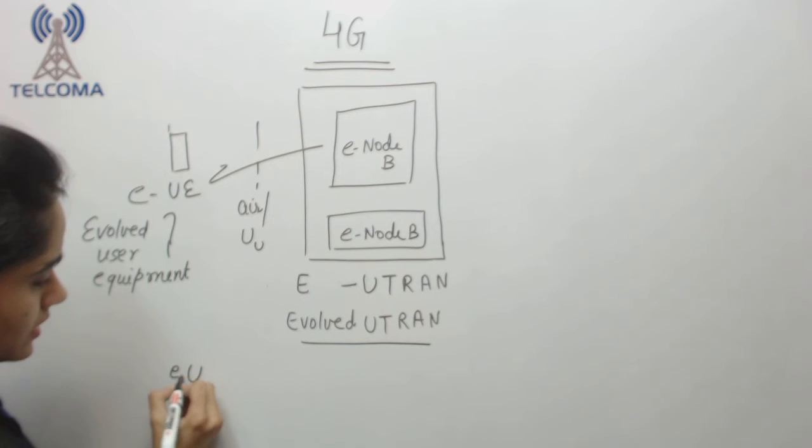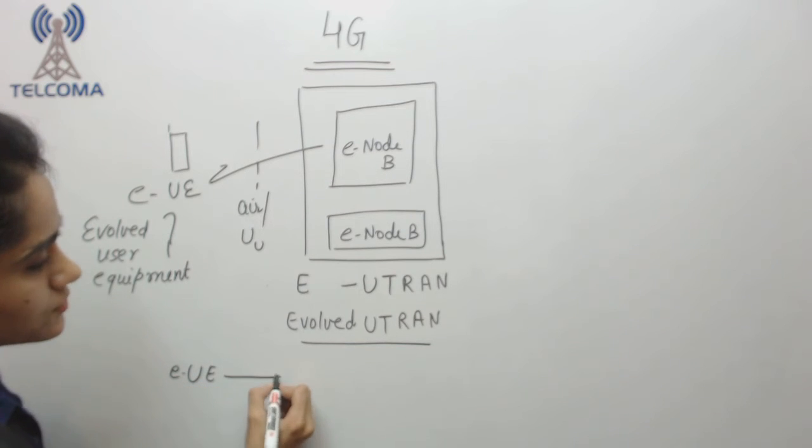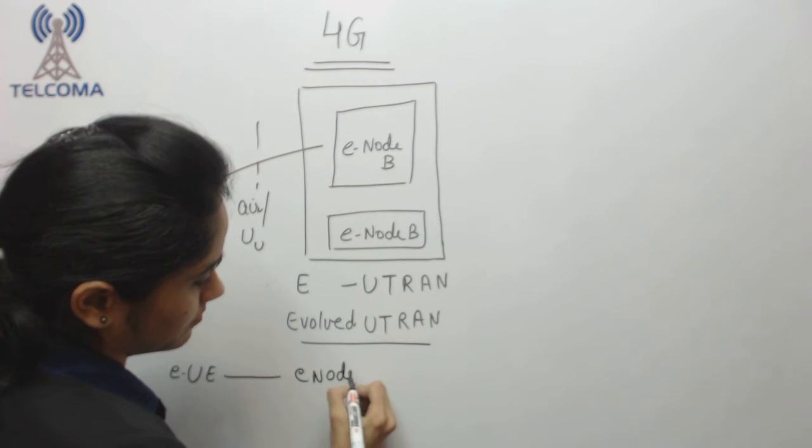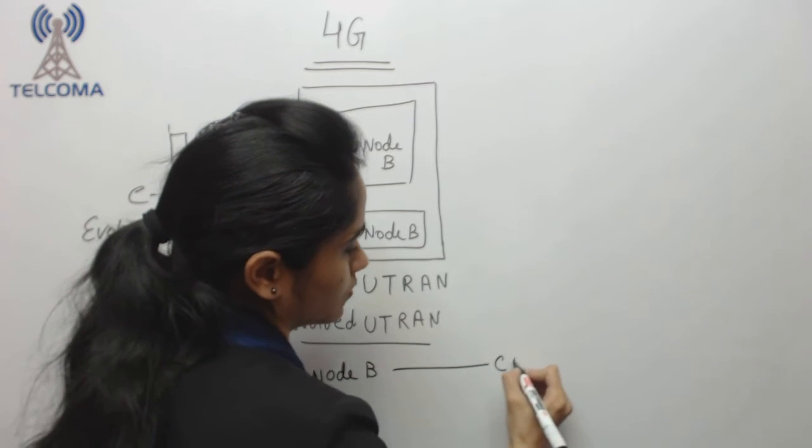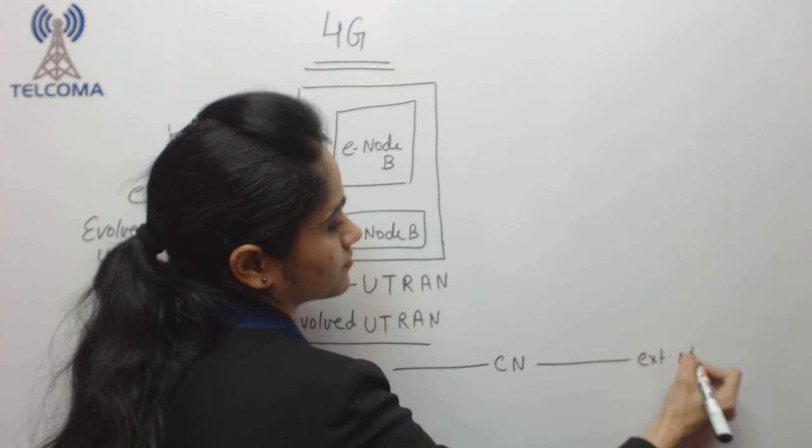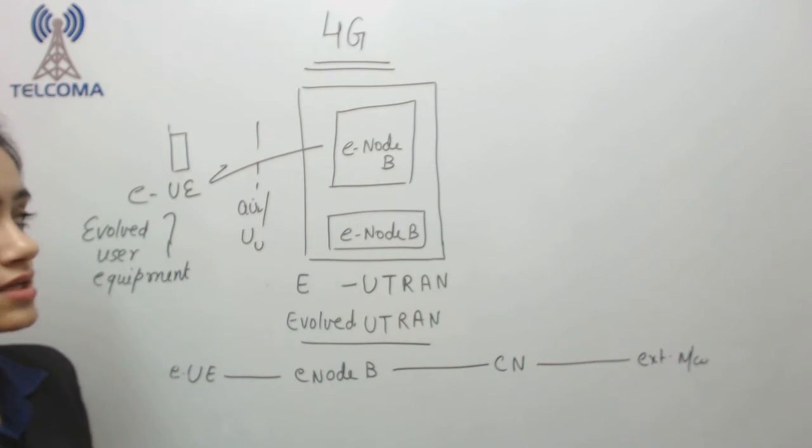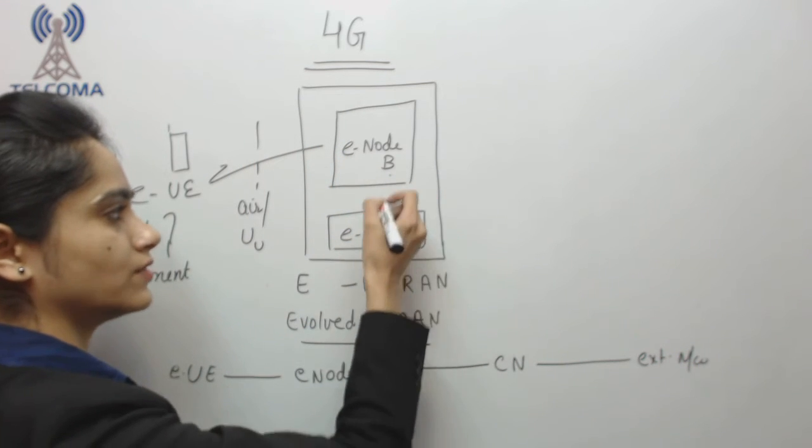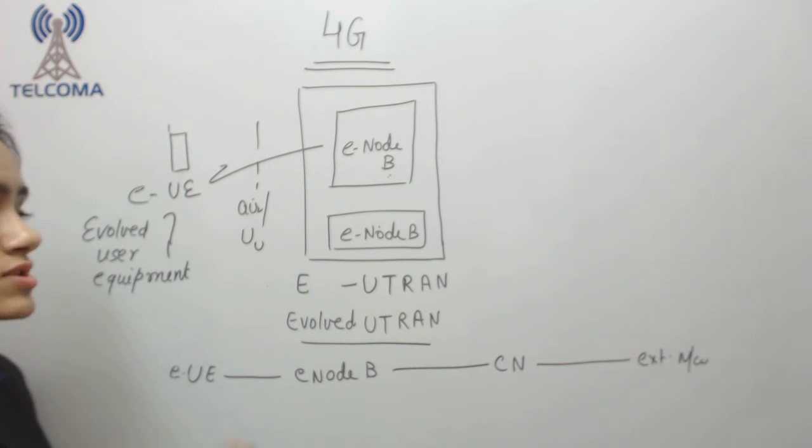So here if we talk about, we have E user equipment, it will attach to E node B which is in the radio part and it is attached to the core network, core network to the external network. That means all the functionality of the radio network controller is now with the E node B and it is more smarter as compared to node B as well as BSC.